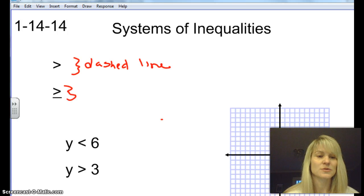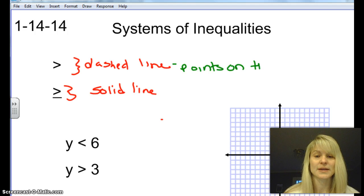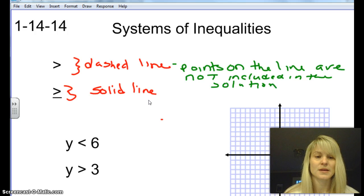And then if it has an equals to, we use a solid line. And if you remember, the dashed line means the points on the line are not included in the solution. So the points on the line are not included in the solution.